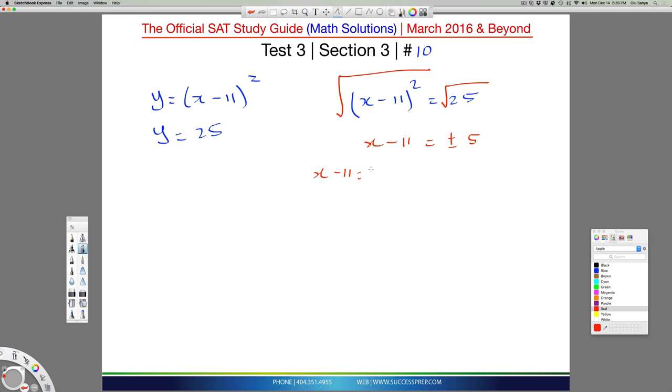So we want to evaluate both of those. I'm saying x minus 11 equal to plus 5, and x minus 11 equal to minus 5. So I'm evaluating both of these as options. I move this over to this side, so minus 11 becomes plus on this side. So it's x equal to 11 plus 5, which is 16.